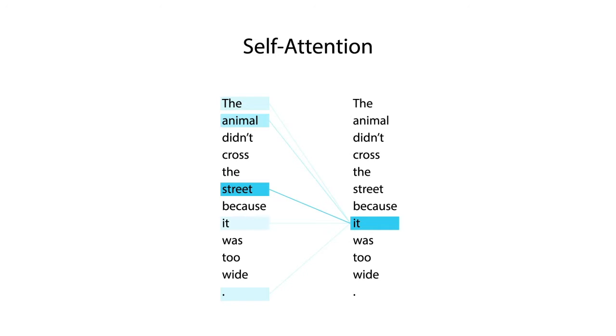Let us take a look at the following example. The animal did not cross the street because it was too wide. The attention mechanism helps us find out if the word IT refers to the word ANIMAL or to the word STREET. The self-attention mechanism shows a stronger match between the word IT and the word STREET as compared to the same word and the word ANIMAL.